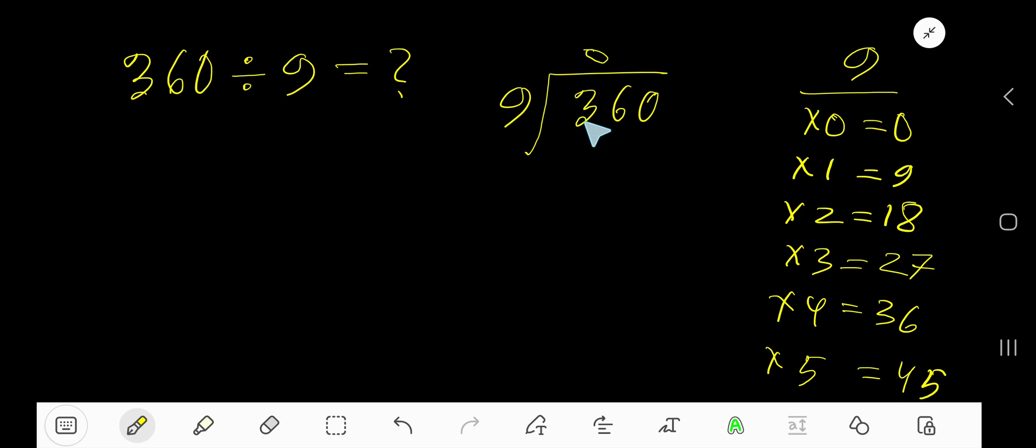3 is less than 9, so 0 times. 9 times 0 is 0. Subtract, you are getting 3.